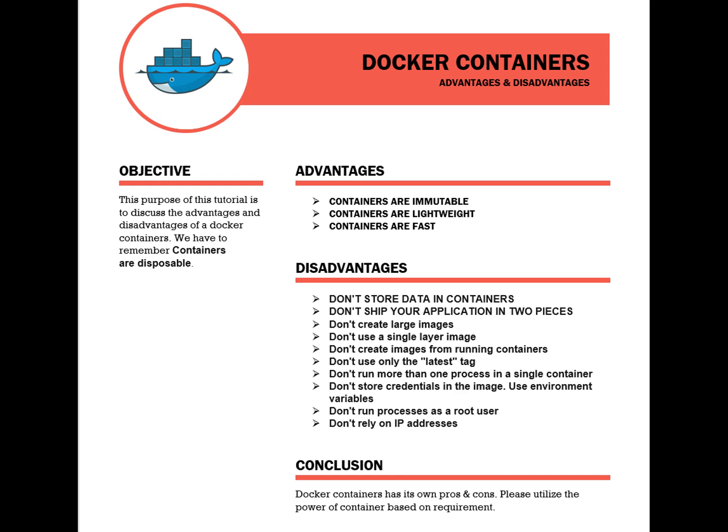Number five: don't create images from running containers. In other terms, don't use 'docker commit' to create an image. This method is not reproducible and should be completely avoided. Always use a Dockerfile or any other source-to-image approach that is totally reproducible, and you can track changes to the Dockerfile if you store it in a version control repository like Git or SVN.